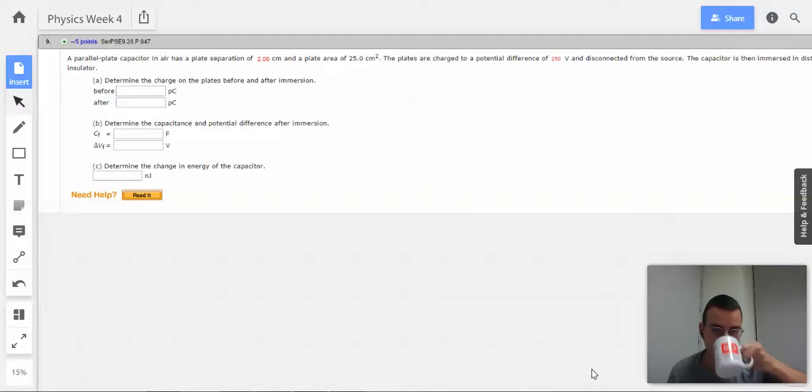Problem number nine. A parallel plate capacitor in air has a plate separation of two centimeters and a plate area of 25 centimeters squared.